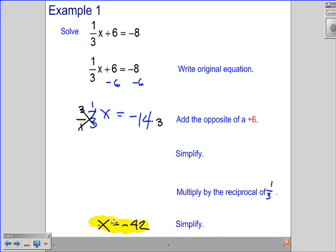Can I simplify that? That is my answer. So x equals negative 42, and those are the steps that I went through in getting there. I can always take that back up and verify my answer. One-third of negative 42 is negative 14. Negative 14 plus six is negative eight. So it does check out.